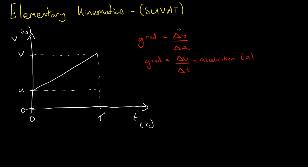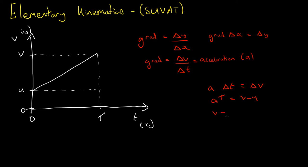Just back to this first statement: if we multiply by delta x, the gradient times delta x is equal to delta y. Applying the same logic, we get acceleration times the difference in the t values equals the difference in the v values. Considering between 0 and t, at is equal to v minus u. Rearranging gives us the first of our SUVAT equations: v is equal to u plus at.